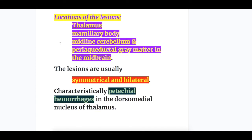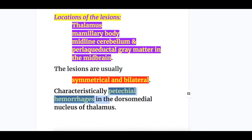What are the locations of lesion in Wernicke's Encephalopathy? Dorsomedial thalamus, mammillary body, midline cerebellum, and periaqueductal gray matter in the midbrain. The lesions in Wernicke's Encephalopathy are usually symmetrical and bilateral. Characteristically, there are petechial hemorrhages in the dorsomedial nucleus of the thalamus.